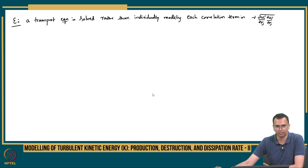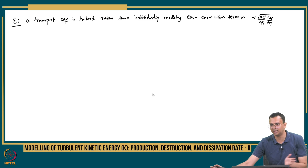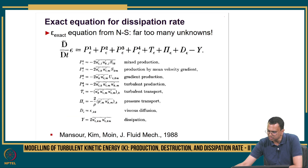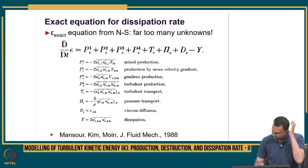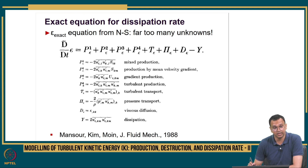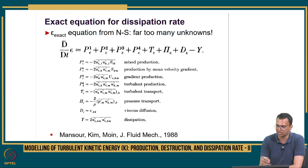This derivation has not been presented here because it would deviate from the modeling chapter. But if you are interested, you can look at the article by Mansoor, Kim and Moeen, Journal of Fluid Mechanics, 1988. This is by far the only paper where a derivation of the exact equation for dissipation rate exists.